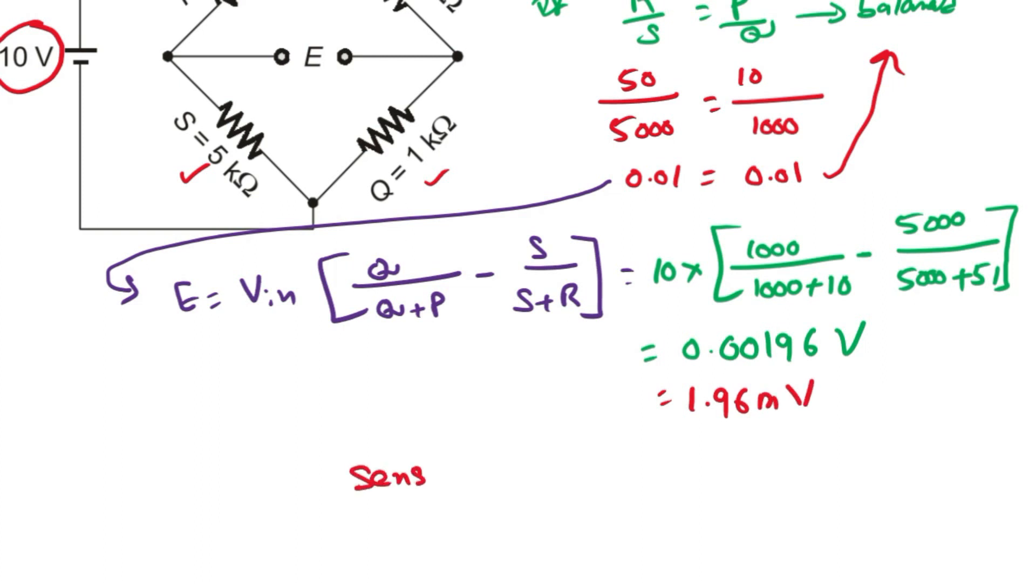So sensitivity S equals output voltage E divided by change in resistor, that is equal to E, we already find out that is 1.96 volts. Change in resistance, that is 1 ohm. So finally, we will get 1.96 millivolt per ohm. This is our answer.